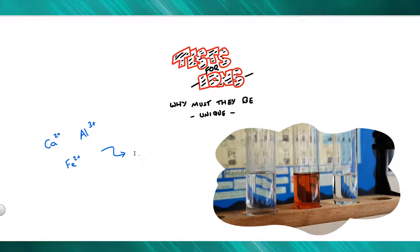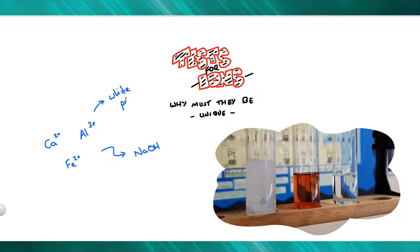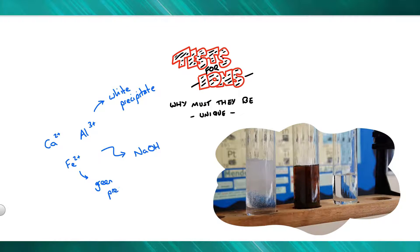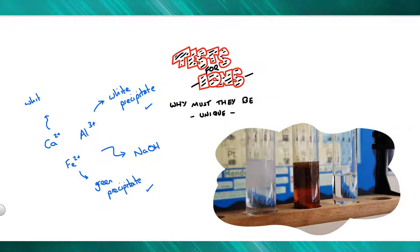If we take all of these in solution and add sodium hydroxide to them, we get a precipitate formed. Aluminium, as you can see here, makes a white precipitate. Iron(II) gives us a green precipitate. However, if we take calcium and put that into sodium hydroxide, as you can see here, we get a white precipitate again.